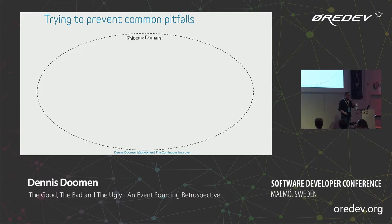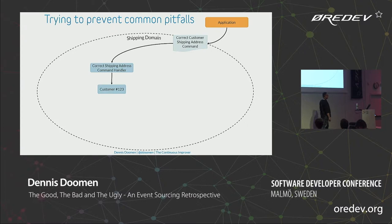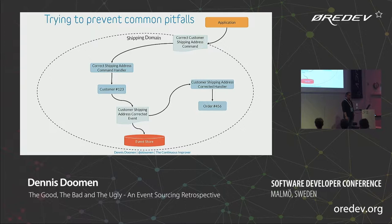Looking at a domain example: we have an application, a shipping domain. We send the command, the command handler handles it, finds the customer with ID 123, and sends an event that the shipping address for that customer has changed — stored in the event store. What happens with the open orders? We've changed the shipping address. Should we update those orders? That's a functional question. In this case, an internal domain event handler takes that event and acts on it — finding all orders (e.g., 456) and redirecting or changing the address.